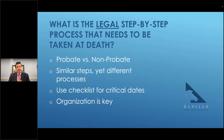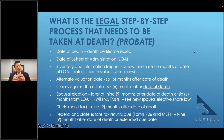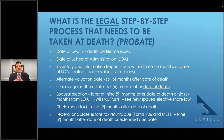Now let's look at the step-by-step process that generally needs to be taken at death. Probate versus non-probate we've largely talked about already. What happens if there's a will or no will? What happens if there's a trust plan — and hopefully that trust plan is funded? If the trust plan is not funded, it will have probate aspects to it. These processes have similar steps but are different. Use the checklist. Organization and process are the key. The legal process broadly begins: date of death, then death certificates are issued.